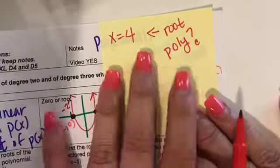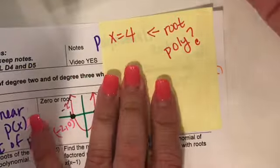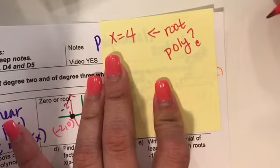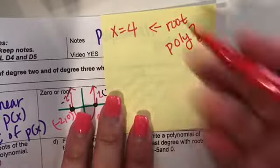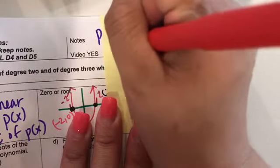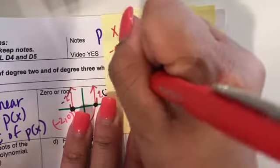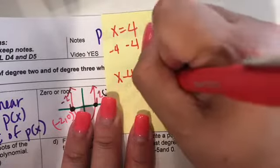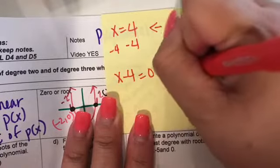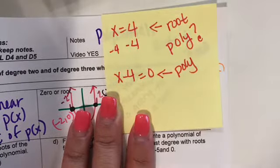Another way to identify a root or zero is by talking about a factor. So let's say we give you the root and we say the root is four — we want to know what the polynomial is. Since it's a positive four, you're going to subtract four from both sides, giving you X minus four equals zero. That's your polynomial.